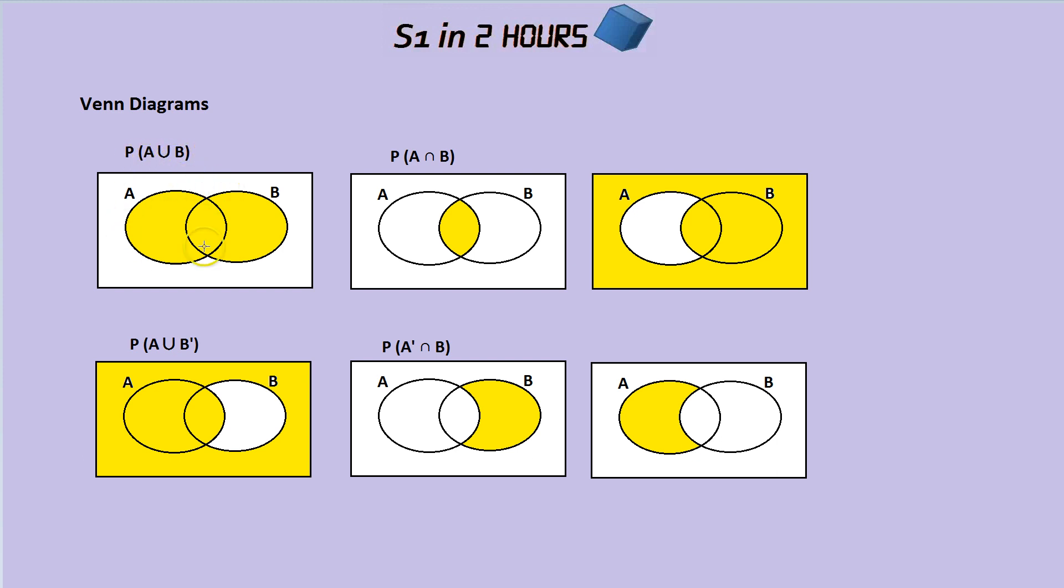So if we look at this Venn diagram, this shows the probability of A or B, because here it's not B, but it is A, so it can be filled in. Here it's not A, but it is B, and this middle bit is both. So this is A or B. We don't mind either as long as we get at least one of them. That's what the U means. So the U stands for or.